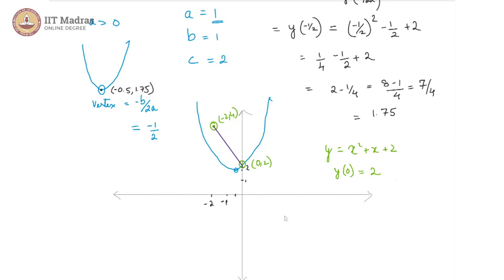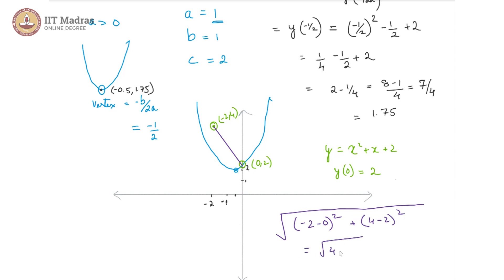We find the length of this line segment using the Euclidean distance formula: the square root of (minus 2 minus 0) squared plus (4 minus 2) squared, which is the square root of 4 plus 4, that is root 8, which is 2 root 2 units.